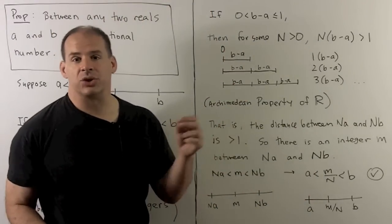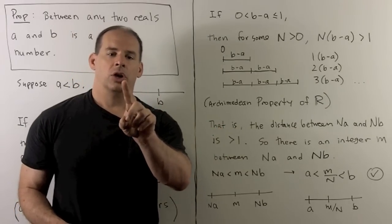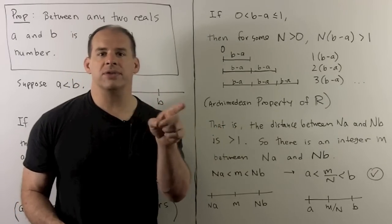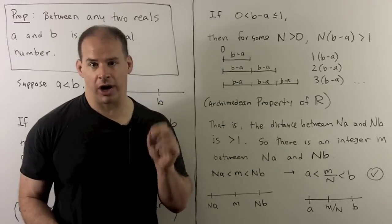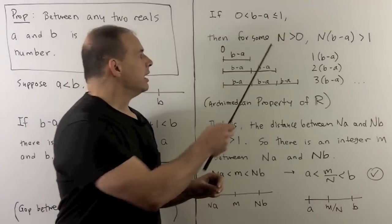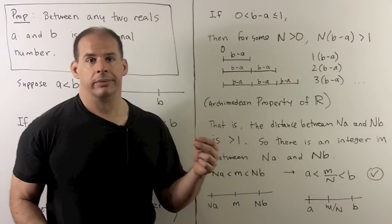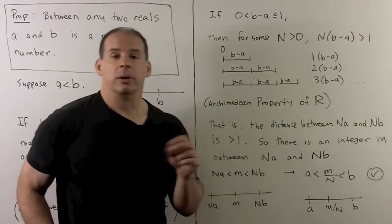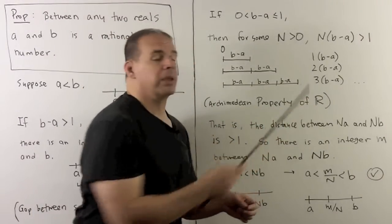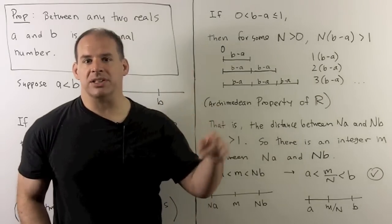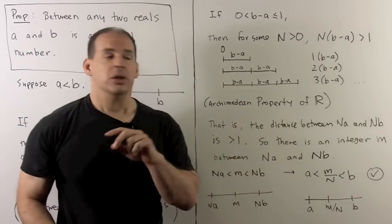For the case where the distance is less than or equal to one, it's going to be the same idea, except instead of adding or subtracting one off of zero continually, we now add or subtract one over n for some fixed positive integer n. To find that n, we appeal to the Archimedean property of the reals. We'll be more precise about this later on, but for here, this just means we take our distance, b minus a.